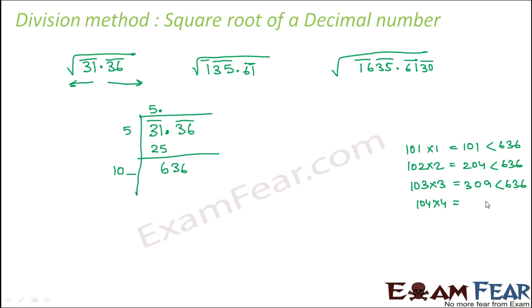If you put 4, then it is 416, which is also less than 636. If you put 5, it is 525, which is less than 636. If you put 6, then it is 636, which is equal to 636.